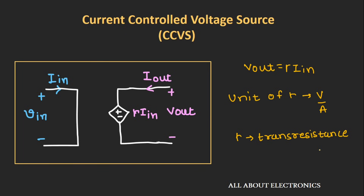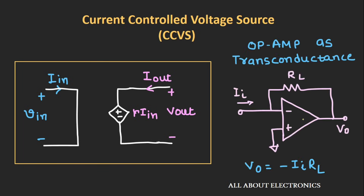Now let's see the practical example of the current-controlled voltage source. Whenever the op-amp is configured in the transresistance mode, it is an example of a current-controlled voltage source. The output voltage of the op-amp depends upon the input current, so as the input current I changes, the output voltage changes by the following expression.